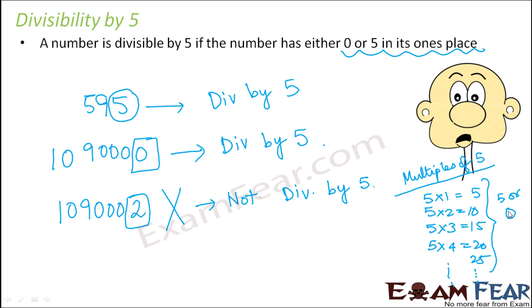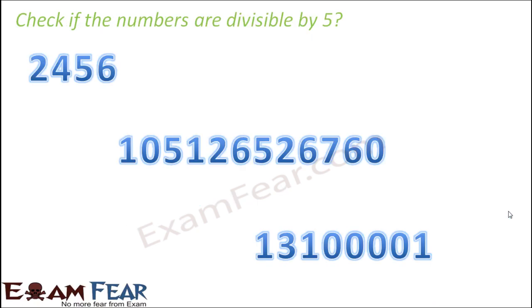Now any number which is going to be divisible by 5 is going to be a multiple of 5, and it has been observed that all multiples of 5 have either 5 or 0 in their units place. That's why we have this rule in place.